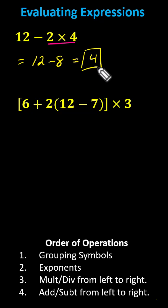For the next expression, the first step is to simplify inside the innermost grouping symbols. We have brackets, and then inside the brackets we have parentheses, indicating the first step is to determine 12 minus 7, which is 5, giving us the quantity in brackets: 6 plus 2 times 5, all times 3.